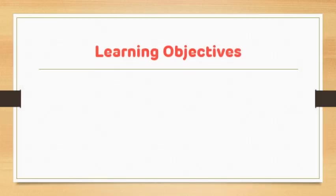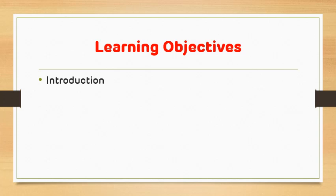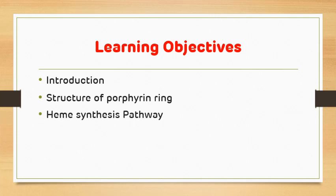The learning objectives for today's video are: first, an introduction; then we will see the structure of the porphyrin ring; then the main heme synthesis pathway; then how it gets regulated; and finally we will discuss a few multiple choice questions which were asked in various entrance examinations. So let's see the introduction.